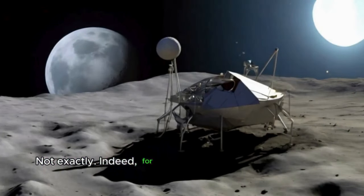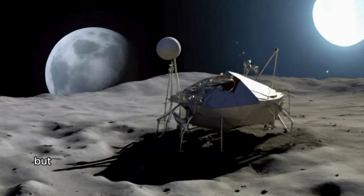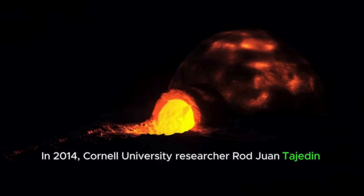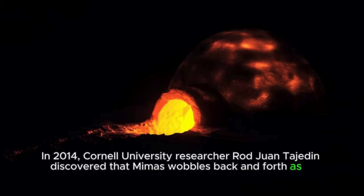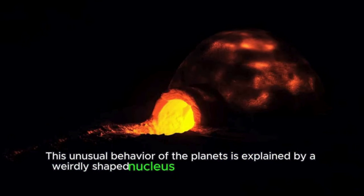Not exactly. Indeed, for a long time, scientists considered Mimas to be a lifeless moon. But a recent observation has forced the scientific world to reconsider its attitude. In 2014, Cornell University researcher Radwan Tajeddine discovered that Mimas wobbles back and forth as it rotates. This unusual behavior of the planets is explained by a weirdly shaped nucleus, or by some kind of internal activity.